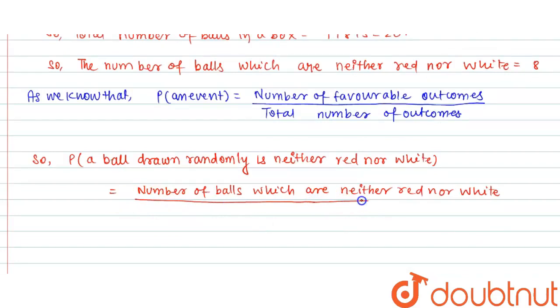divided by the total number of balls. This equals 8/20, which can be written as (4×2)/(4×5). The 4s cancel, giving us 2/5.